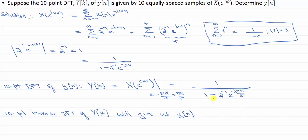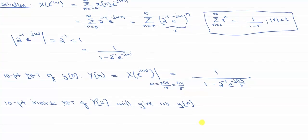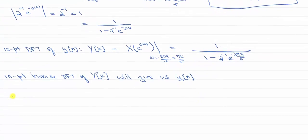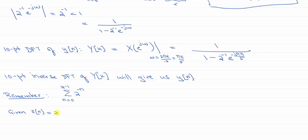You can try to use the inverse DFT formula directly, but I'll remind you of a common result. If you are given a sequence S(N) equals 2 to the minus N, for N from 0 up to N minus 1, then the N-point DFT of that is computed using the finite geometric series formula: sum from 0 to N minus 1 of 2 to the minus 1 times e to the minus j 2 pi K over N, raised to the N.